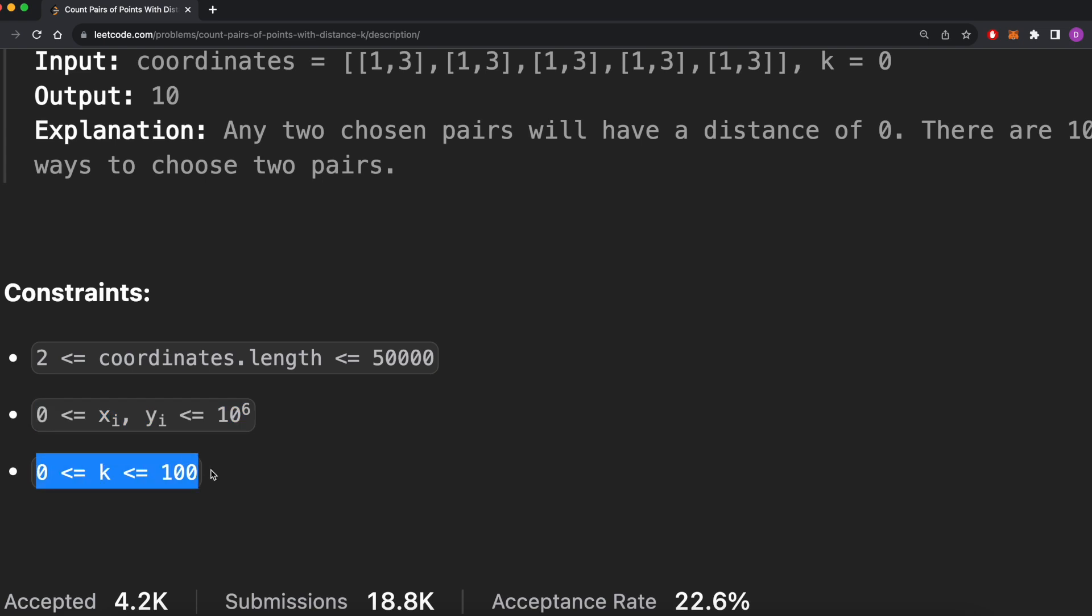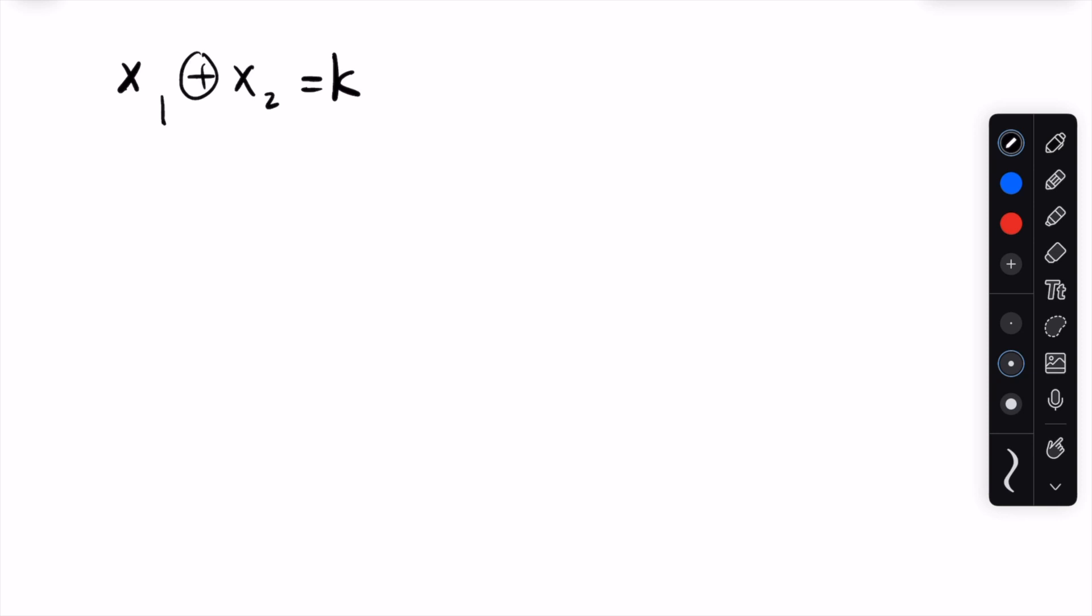If we do an n-squared algorithm, the cost is going to be quite costly. 50,000 squared is pretty substantial, it's 2.5 billion permutations to check, and they might give us a time limit exceeded error. So that's a sign that we should at least consider some other approaches first.